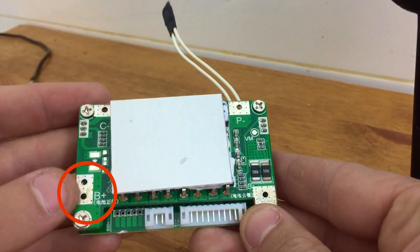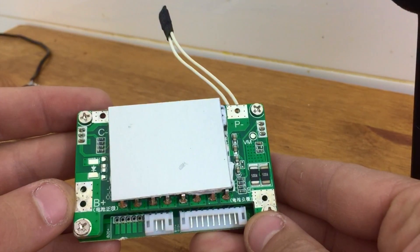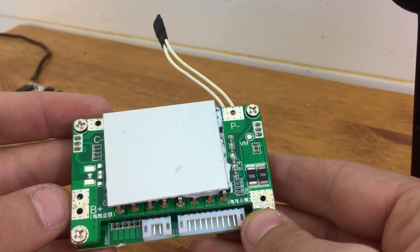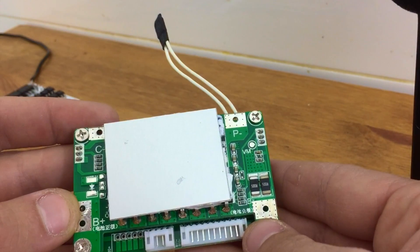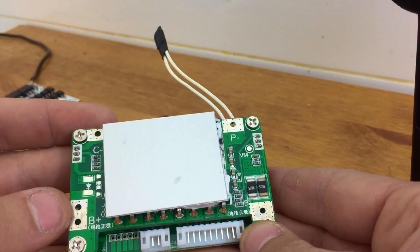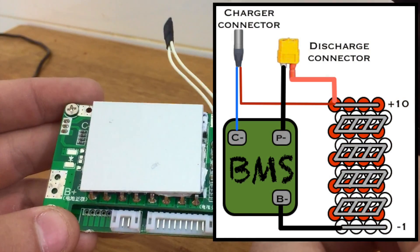This BMS actually has a B-plus pad. This is fairly rare. Most BMSs I've worked with don't have a B-plus pad, but this one does. On this one, you'd connect this to the positive end of your last set of cells. On a 48-volt battery, that'd be your 13th cell group. But most of the time, you're just going to see the B-minus, P-minus, and C-minus.